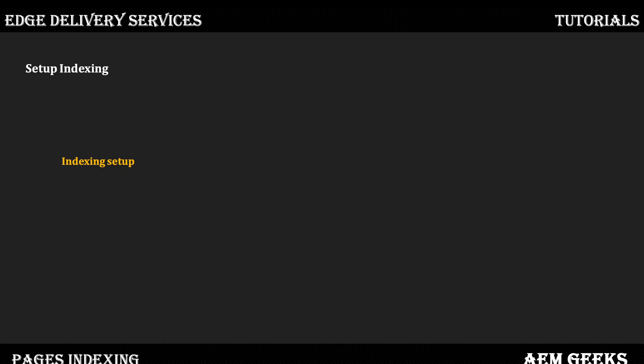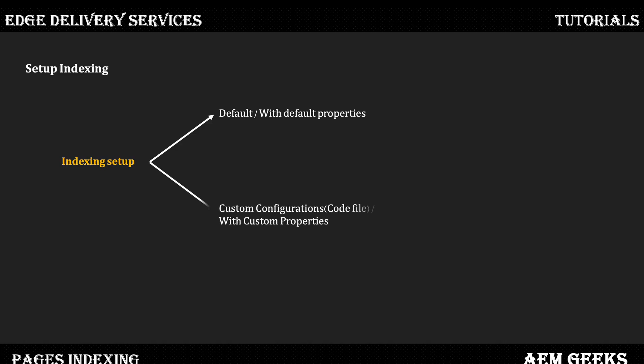We can implement indexing in Edge Delivery Services in two ways. One is the default way when you don't need any configurations — you do not need to write any code or any configuration file. Another one is custom indexing, where if you want to add specific properties, you need to add a specific configuration file in your codebase in your Git repo. We'll see both.